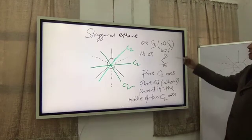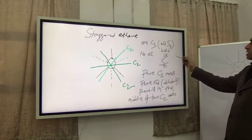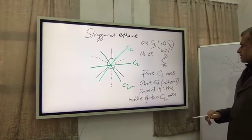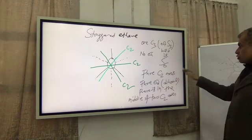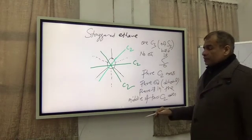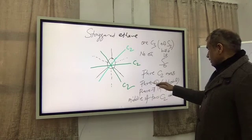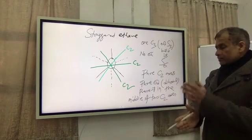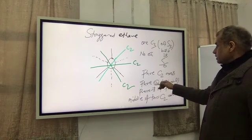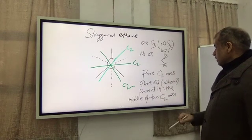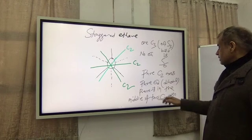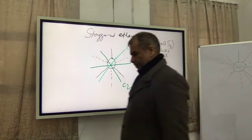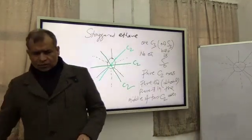Let me repeat: in the staggered form you have one C3 axis, there is no sigma horizontal, the C3 is acting as an S6 axis, there are three C2 axes, and between any two C2 axes there is one plane which is called a dihedral plane, and there are three sigma dihedral planes present in between any two C2 axes. That's the situation for the staggered form. In the same way, if you try for...